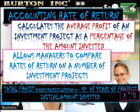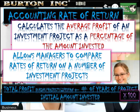We've got the formula here: total profit during the project's lifespan divided by the number of years of the project, then divided by the initial amount invested. Because we're talking about a percentage, we multiply it all by 100. This formula is given to you in the exam, so you won't need to memorize it for your IB Business and Management exam.